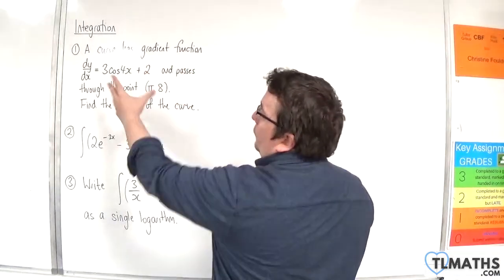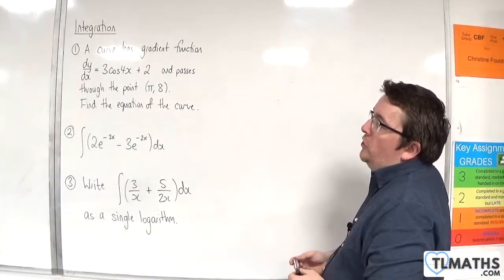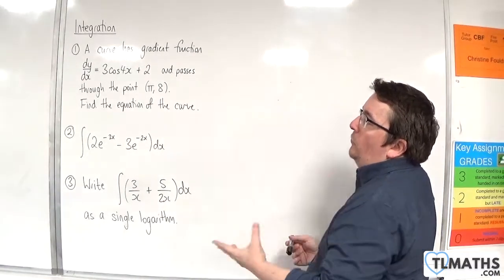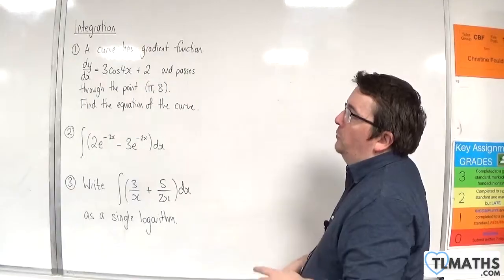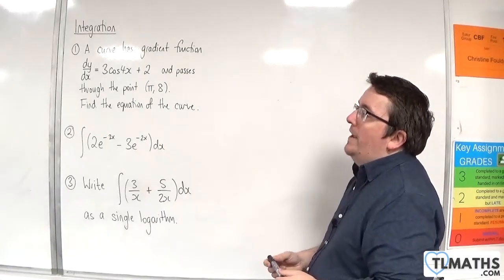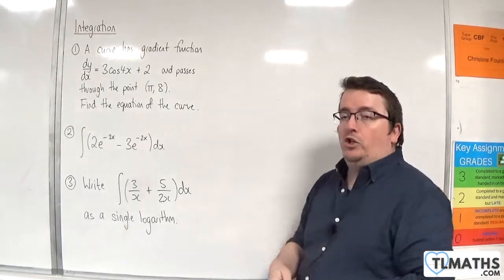With this first one, we've got a curve has gradient function dy by dx equals 3 cosine of 4x plus 2, and passes through the point pi over 8. Find the equation of the curve.